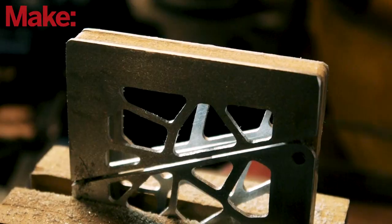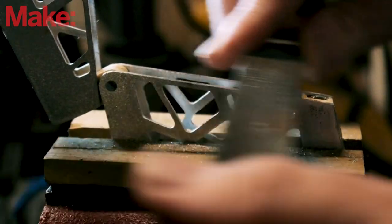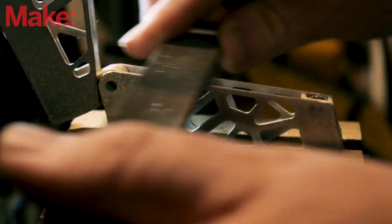The last thing I do is use a file to finish the outer edges, making sure the wood and metal edges are flush to each other, rounding the corners, and making sure the two halves mate smoothly when closed.